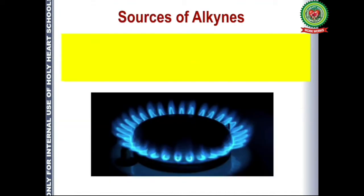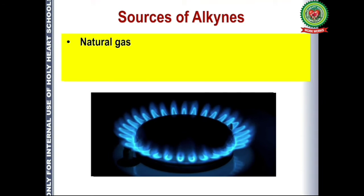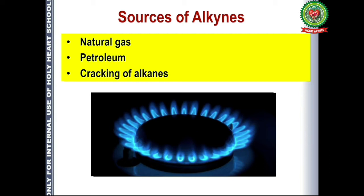The next thing we should know is how alkynes are obtained — the sources of alkynes. The first one is natural gas, the second is petroleum, and the third is cracking of alkanes. Cracking of alkanes means breakdown of alkanes in the absence of air. Natural gas is obtained underground in the earth's crust, containing various hydrocarbons, and fractional distillation of those hydrocarbons gives rise to alkynes.